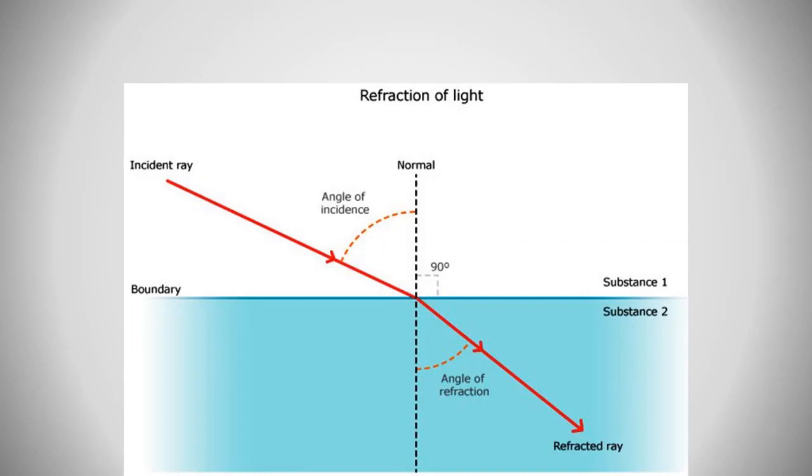On the point of incidence, we should draw a normal line. This normal line is perpendicular or forms 90 degrees with the boundary. We draw it as an imaginary line to find or to measure the angle of incidence. It is between the incident ray and the normal line, and the angle of refraction, which is the angle between the refracted ray and normal line. This is very important to know the definition of these two angles: angle of incidence and angle of refraction. They are not equal.